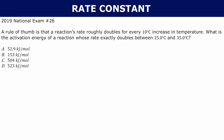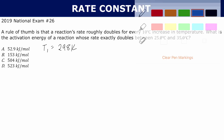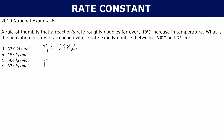We have two different temperatures. Let temperature one be 25 degrees Celsius, which is 298 Kelvin, and then temperature two is 35 degrees Celsius, which is 308 Kelvin.